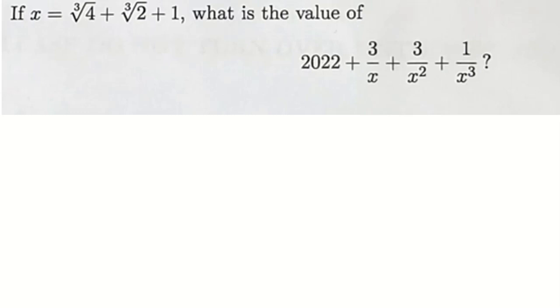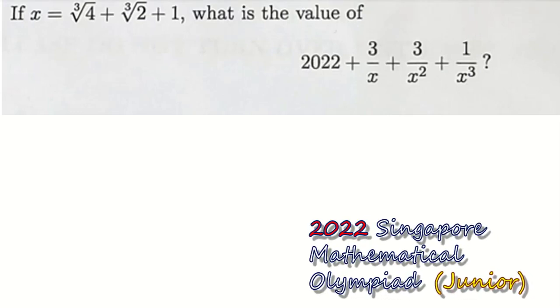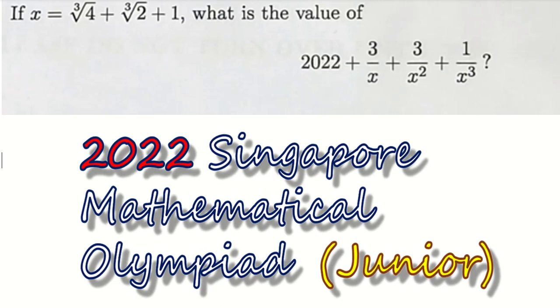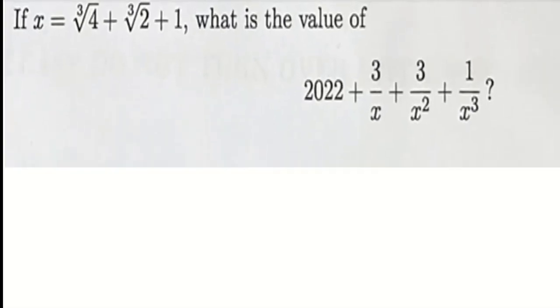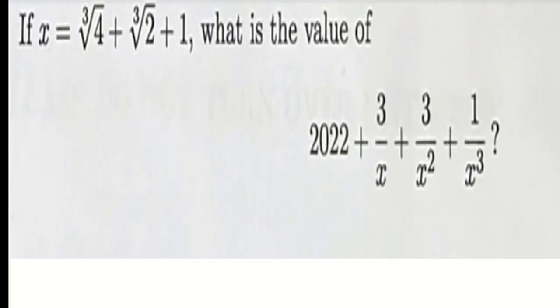For today, let's look at this question from SMO 2022 junior session. So for this question, given that x equals cube root of 4 plus cube root of 2 plus 1, we are asked to find the value of 2022 plus 3 over x plus 3 over x squared plus 1 over x cubed.